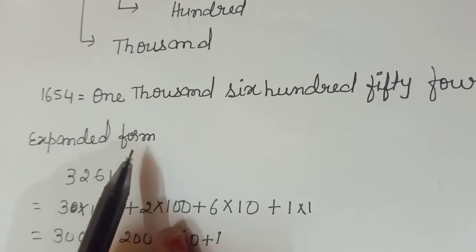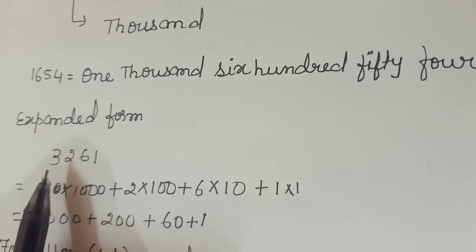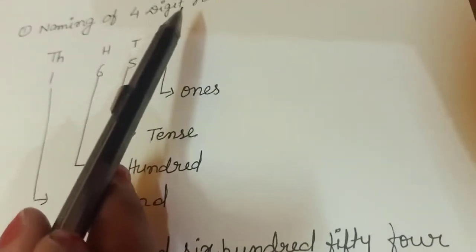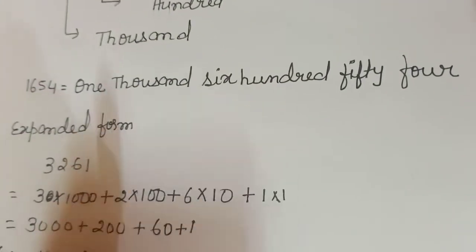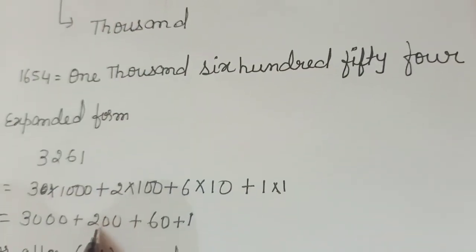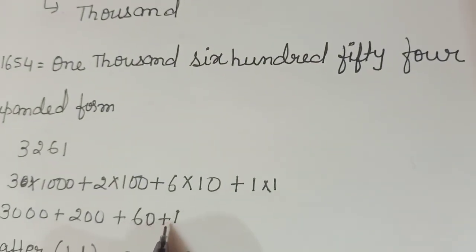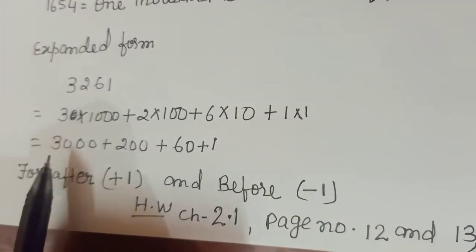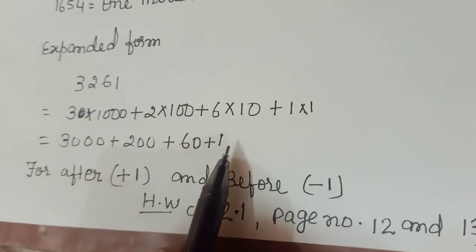Expanded form. Suppose, we are taking a number 3, 2, 6, 1 and see the table place value table. 3 is in place of 1000, so 3000. 2 is in place of 100, so 200. 6 is in place of 10s, so 60 plus 1 is in place of 1s. So, answer is 3000 plus 200 plus 60 plus 1.